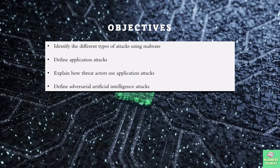In this lecture we will cover the following topics. We will start by identifying and understanding various types of attacks that can target computer systems. Next we will define what application attacks are and how they differ from other types. We will then explore how threat actors leverage application attacks to compromise systems and data. Finally, we will discuss adversarial AI attacks, where attackers use AI techniques to create sophisticated and hard-to-detect attacks.